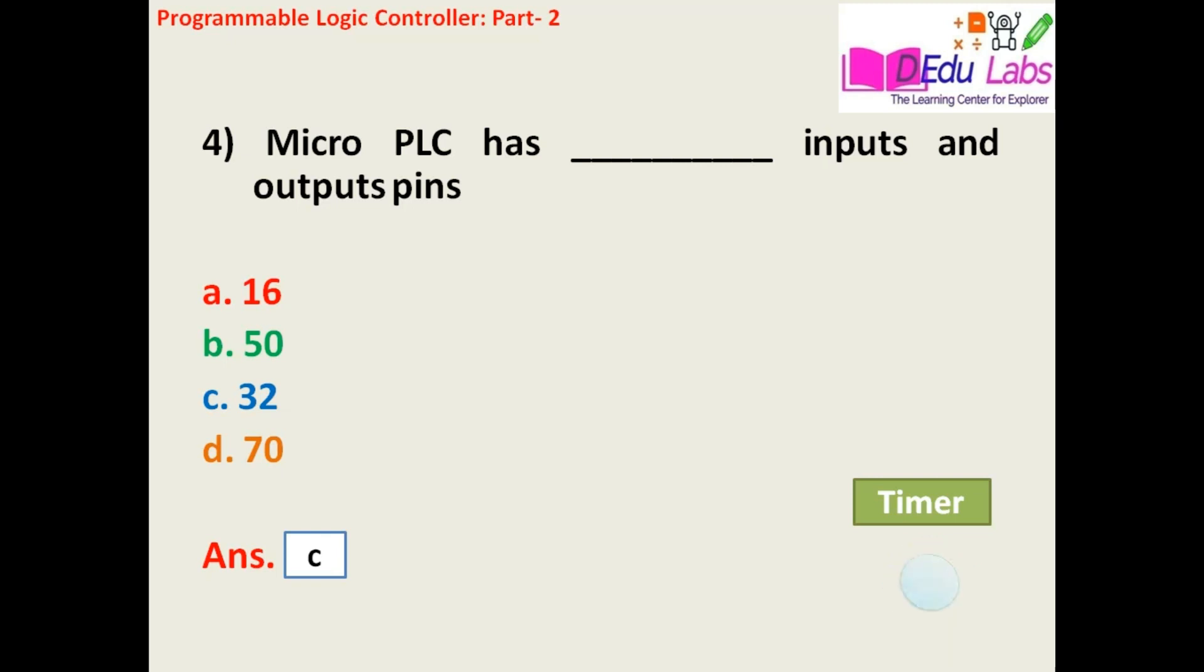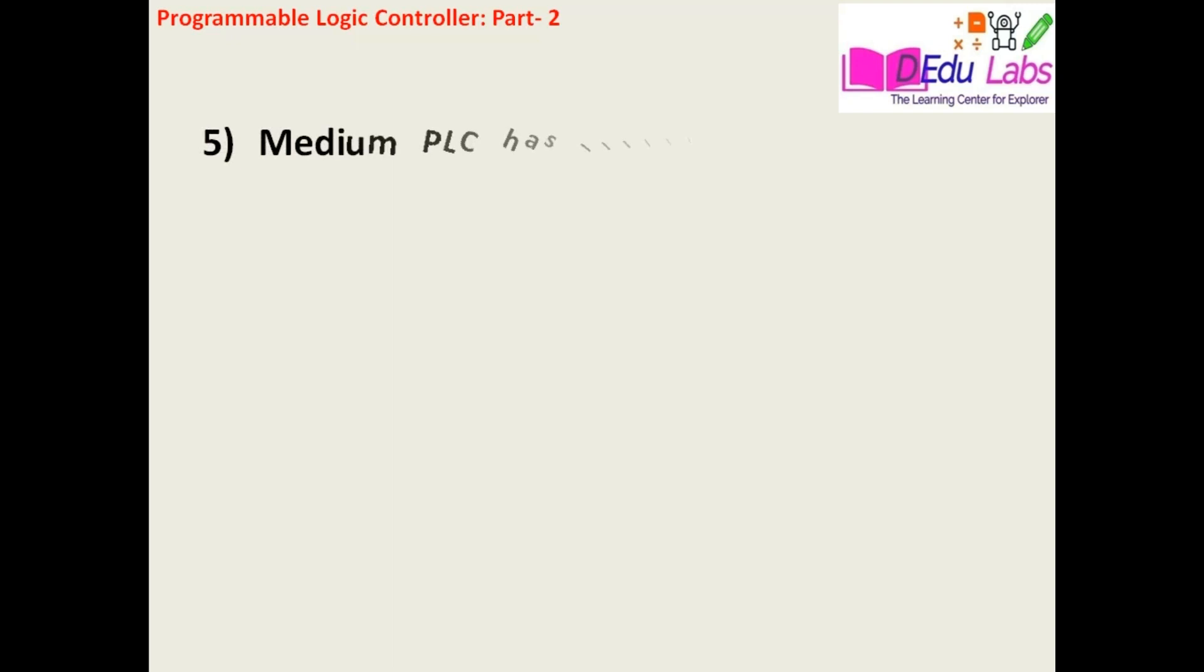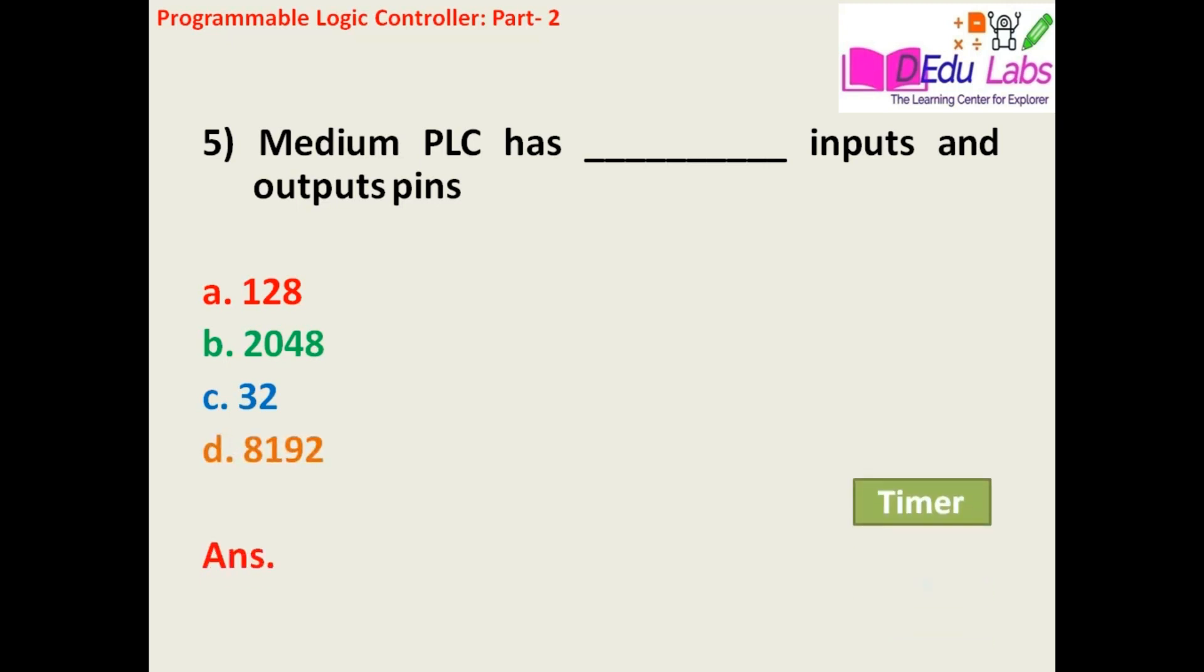Question number five: Minimum PLC has blank inputs and output pins. Option A: 128, Option B: 2048, Option C: 32, Option D: 8192.